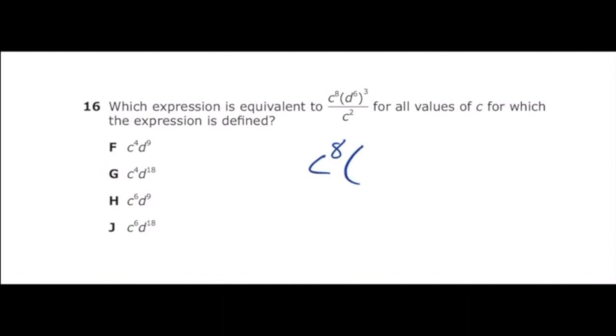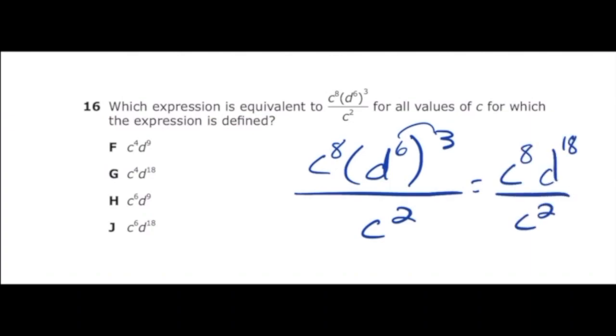So I'm going to rewrite my expression and the first thing I need to do is take care of my parentheses. I'm going to multiply my 6 and 3 to get 18, so I can rewrite that as c to the 8th times d to the 18th over c squared. From here I just need to subtract the 8 and the 2 that both go with c and that's going to end up giving me c to the 6th power times d to the 18th power which is letter J.